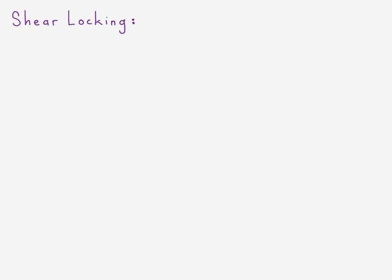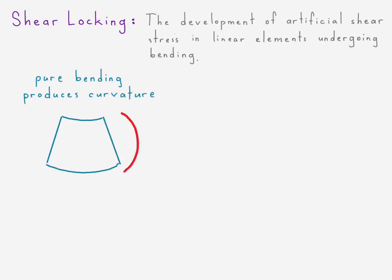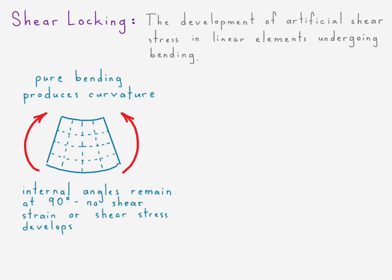Let's take a look at shear locking — what does this term mean? When actual bending occurs, there should be no shear stress that develops, as in pure bending with no transverse shear. If we had an actual physical beam, we would notice that at every single corner, due to the curvature on the top and the bottom, all those corners would remain at 90 degrees. Since they remain at 90 degrees, no shear strain occurs, and hence no shear stress develops.